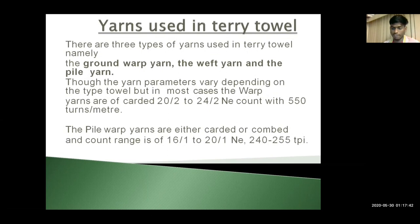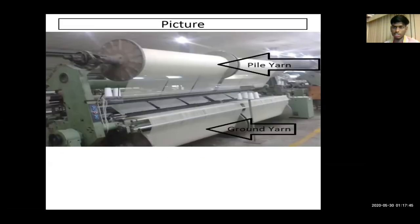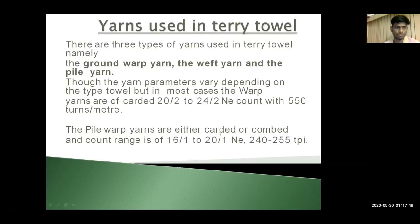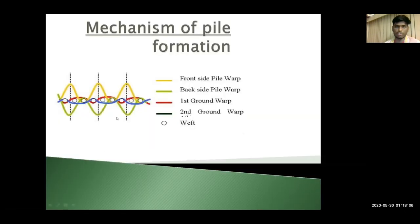Yarns used in terry towels — I would like to show you the yarn machine first. This is a yarn machine showing the pile yarn and the ground yarn. We have different types of terry towel yarns: ground warp yarn, the weft yarn, and the pile yarn. The yarn count parameters are 20/2, 24/2, or any count with 550 turns per meter. This is just for your information.